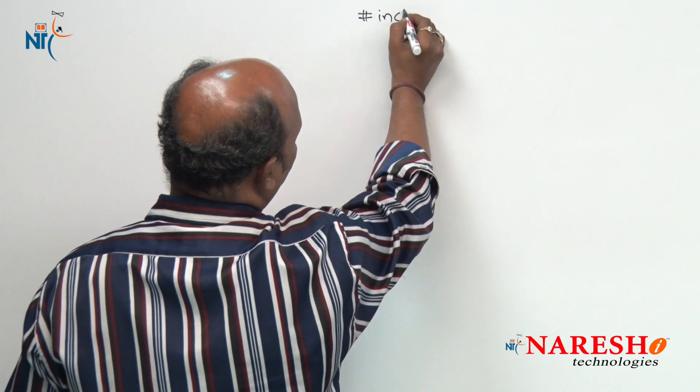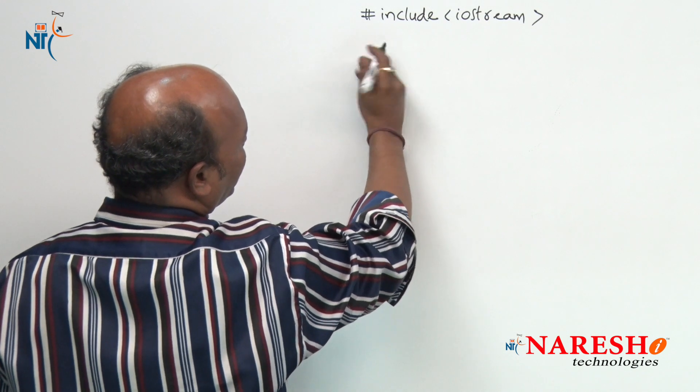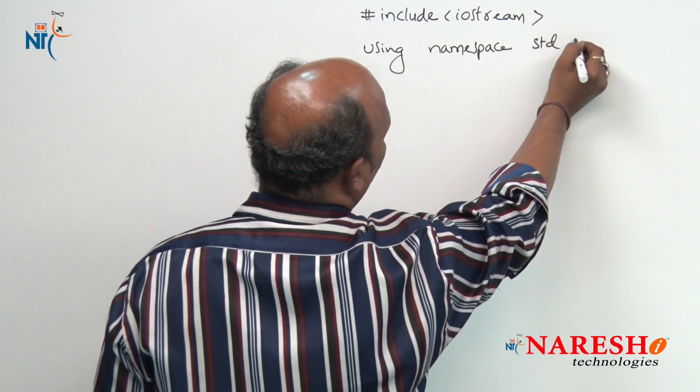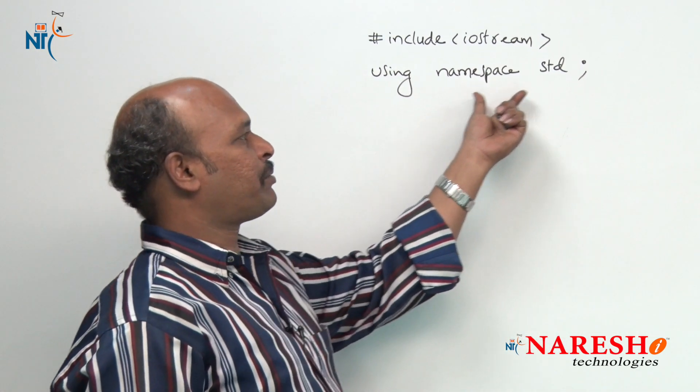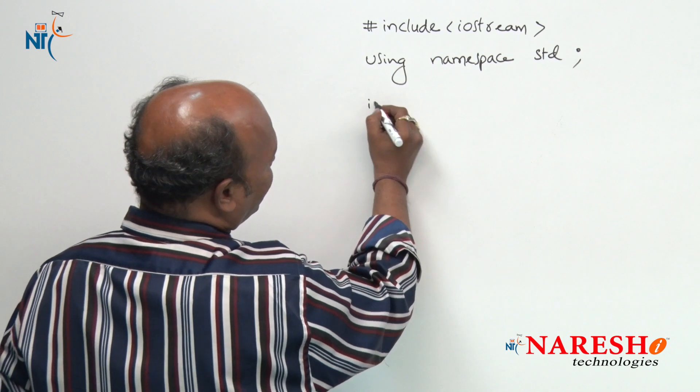I am going to give you an example of exception handling with a class. There is a base class and I want to show you how throws are working. We start with hash include iostream, then using namespace std, because we are going to use cout and cin, and then int main.